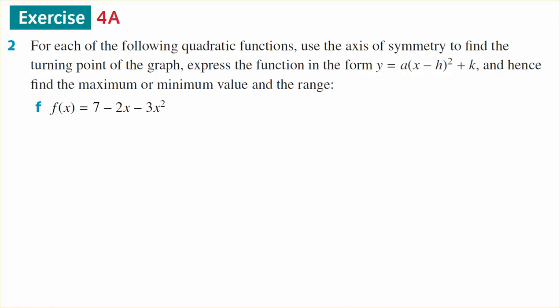I get the axis of symmetry because the x component of the turning point will give you the equation of the axis of symmetry, and the x component of the turning point is -b over 2a. So in this case, if I rewrite this as -3x² - 2x + 7, b is -2, so 2 over a which is -3, so -6. So -1/3 is the x-coordinate of the axis of symmetry.